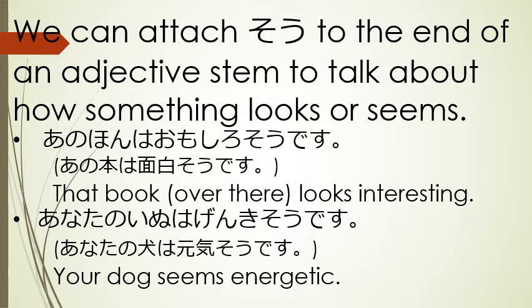The way to use sou that we're really going to focus on in this lesson is attaching sou to an adjective stem to talk about how something looks or seems. For example, I could say 'Ano hon wa omoshiro sou desu,' meaning 'that book looks interesting.' I could also say 'Anata no inu wa genki sou desu,' meaning 'your dog seems energetic.'